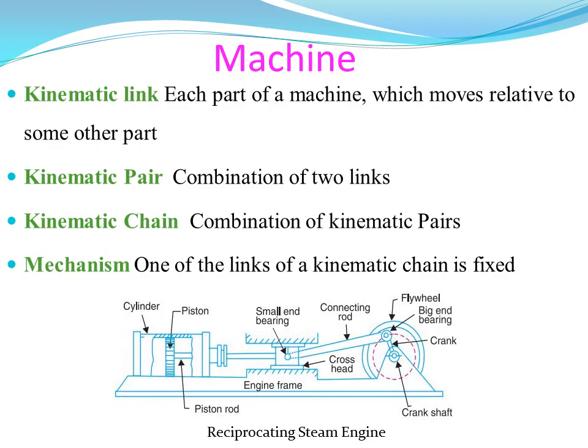For example, we can use the reciprocating steam engine. We can identify: a crank, a connecting rod, a piston, a cylinder, and an engine frame. In this case, we fix the engine frame. For the crank, we have rotary motion. For the connecting rod, we have oscillatory motion. For the final piston and cylinder arrangement, we have reciprocating motion. In this case, we use these as links.